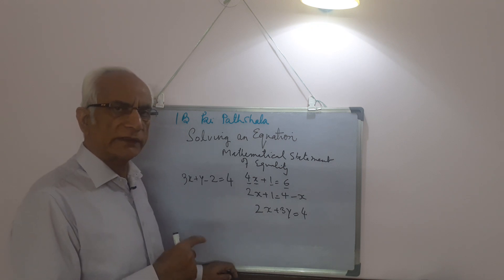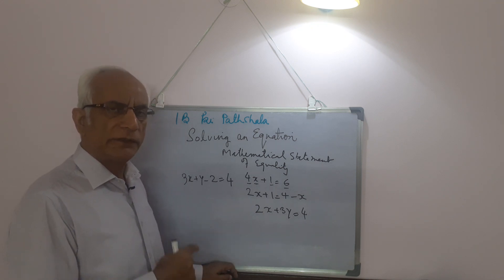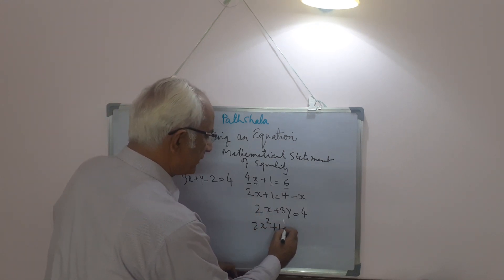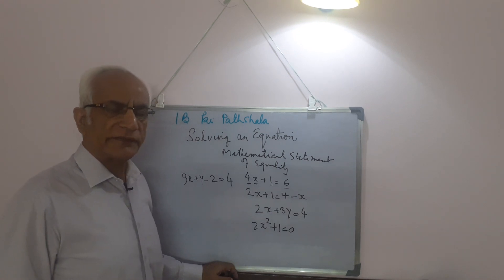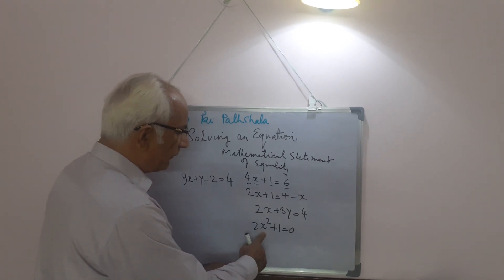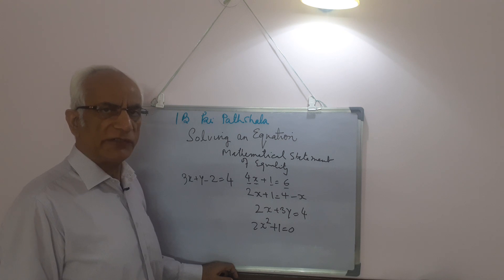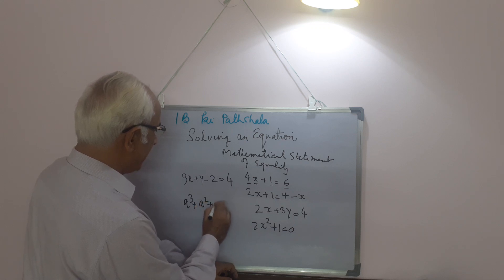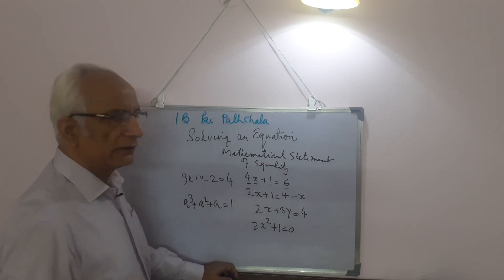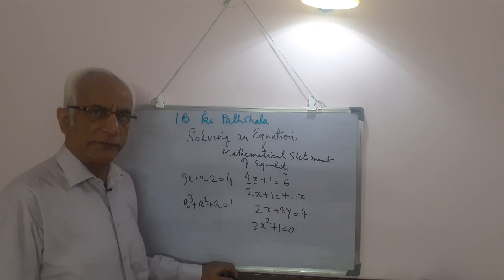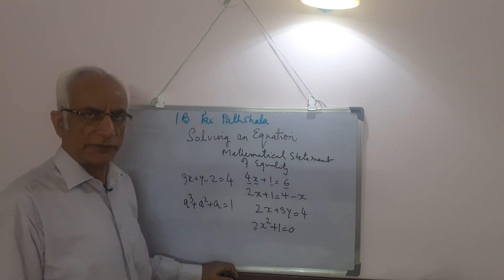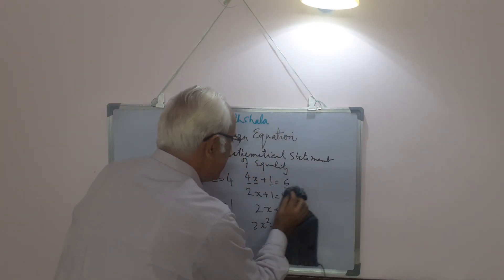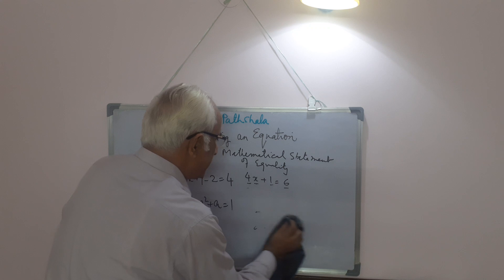If the degree is 2 or 3, it becomes an equation of higher degree. For example, 2x squared plus 1 equals 0 is a quadratic equation because the degree of the variable is 2. And a cubed plus a squared plus a equals 1 is a cubic equation because the highest power of the variable is 3. Today we will learn how to solve a linear equation in one variable.